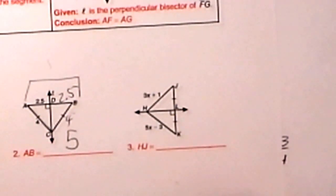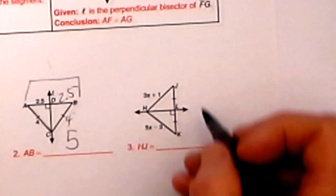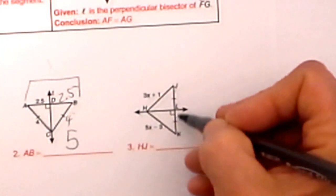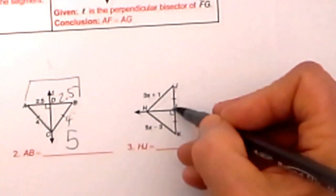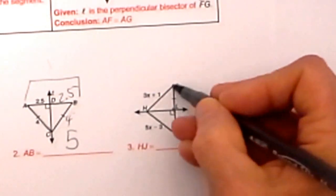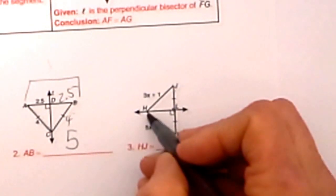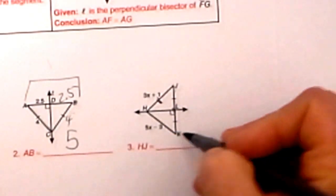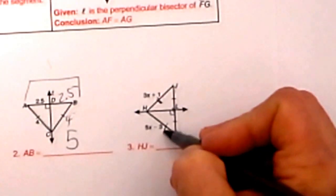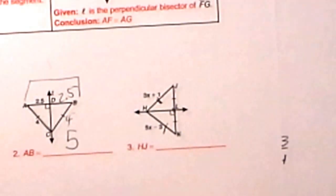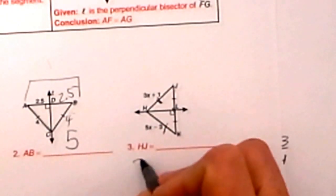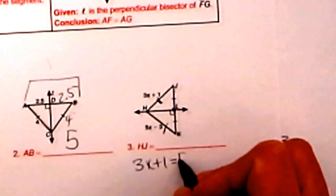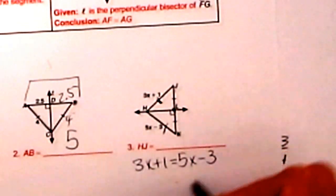Now let's look at an algebraic problem. So JK is our segment, L is our midpoint, so JL and LK are both congruent. That means HJ, this segment, is congruent to HK, this segment. So if those two are congruent to each other or equal, we can actually set those algebraic expressions equal to each other and then we can solve.